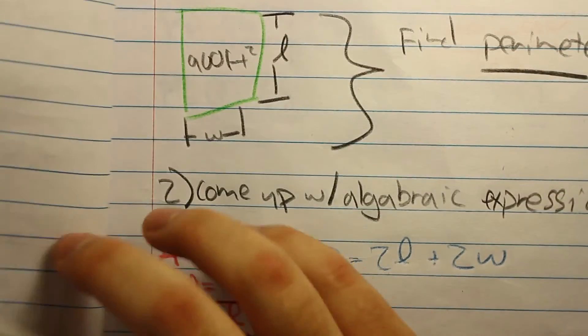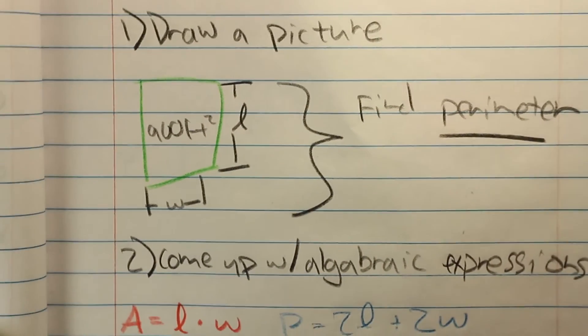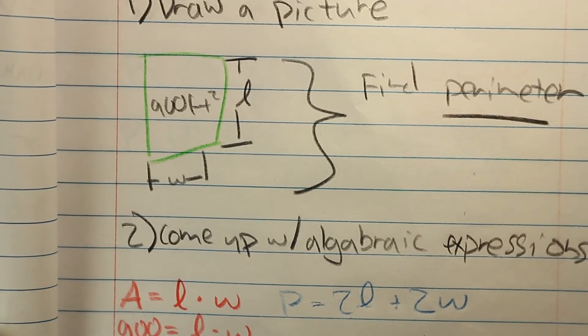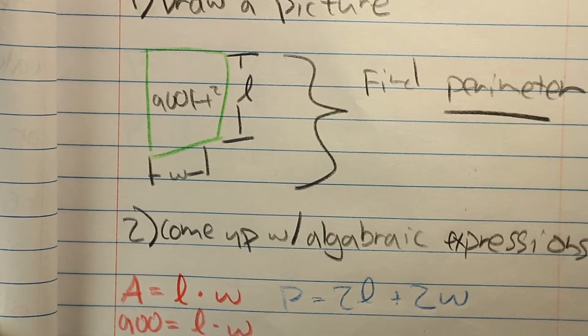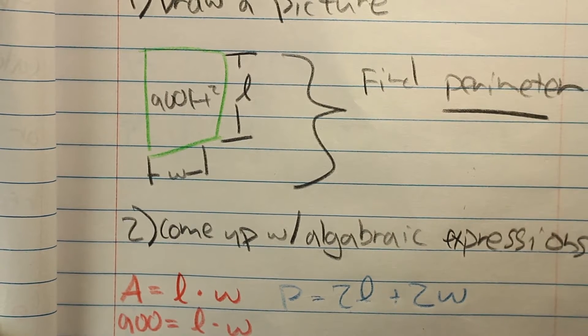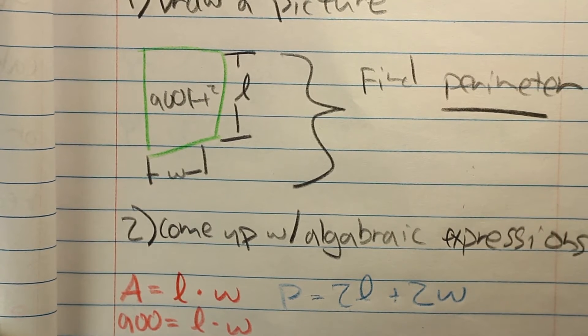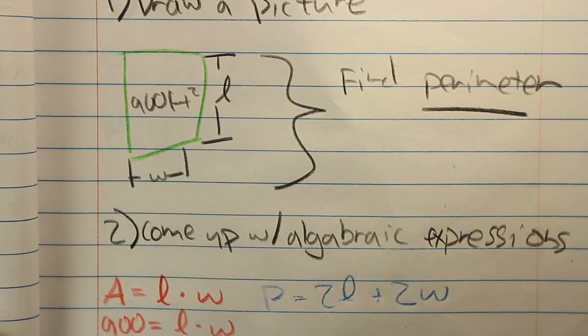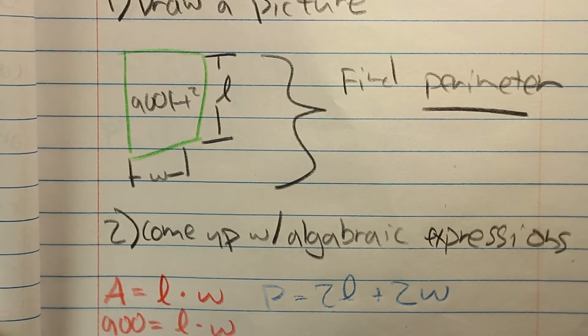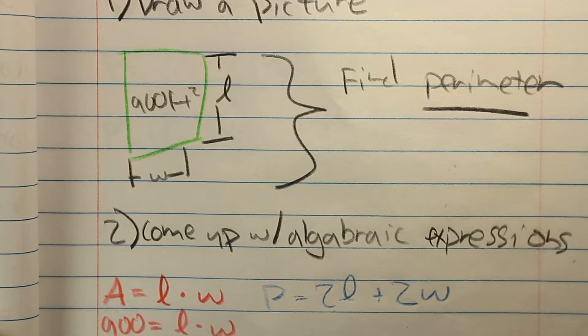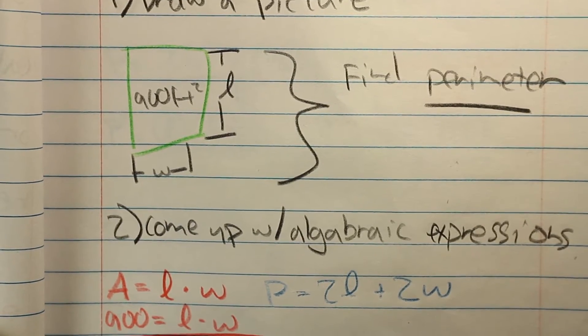Step 1 to solve this problem is to draw a picture. So we here have a rectangle of 900 square feet with an unknown length and an unknown width. And we are going to find a perimeter because we are surrounding the garden with flowers, so surrounding the box with flowers hypothetically.